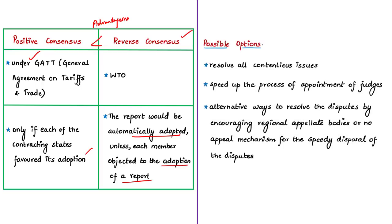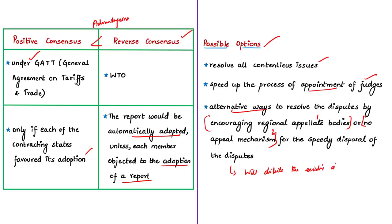In the event of a dysfunctional appellate body, WTO's first option is to resolve the contentious issues raised by the US and other members in the appointment process, so that WTO can speed up filling the appellate body positions. WTO must also examine alternative ways to resolve disputes, like encouraging regional appellate bodies or a no-appeal mechanism for speedy disposal. However, these alternatives would dilute the existing dispute settlement system, since the centrality of WTO's mechanism is this dispute settlement system. WTO must balance itself carefully when considering alternative ways.